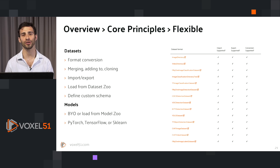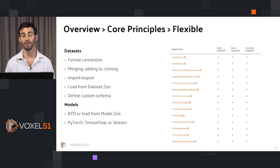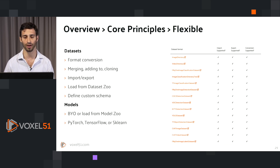FiftyOne is flexible, customizable, and connected. It recognizes that computer vision and machine learning are not one-size-fits-all fields and is built to facilitate your workflows, whatever those may be. One part of that flexibility is data: FiftyOne supports a variety of common dataset formats, everything from COCO and VOC to KITTI, and integrates natively with CVAT and a bunch of other common formats. FiftyOne also has built-in support for video dataset formats, point cloud formats, and more.